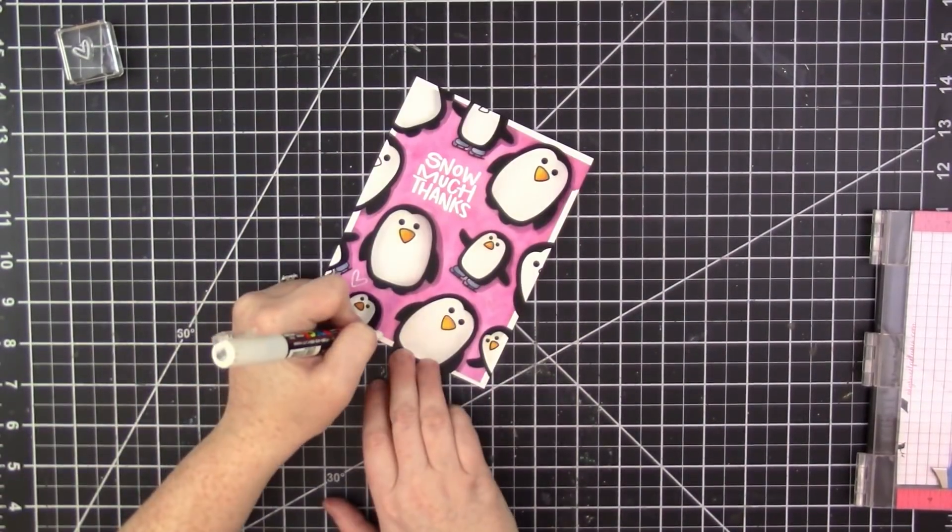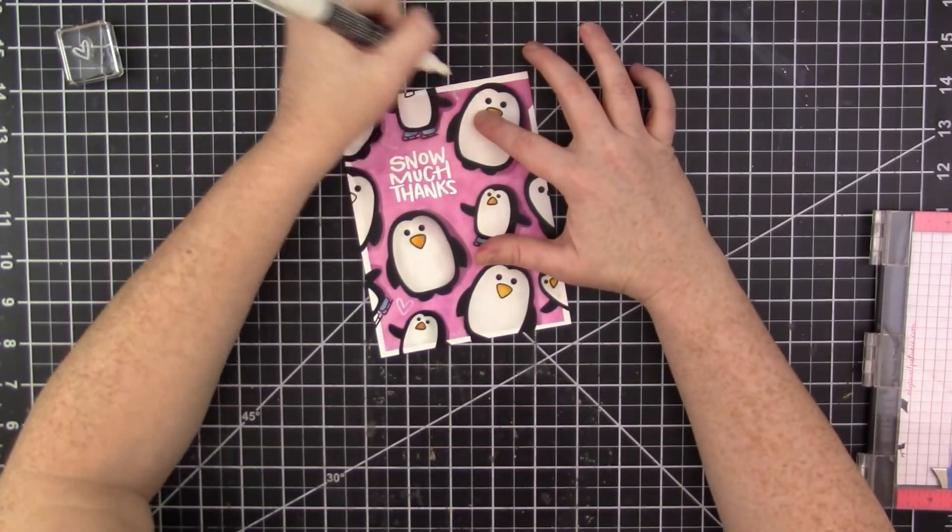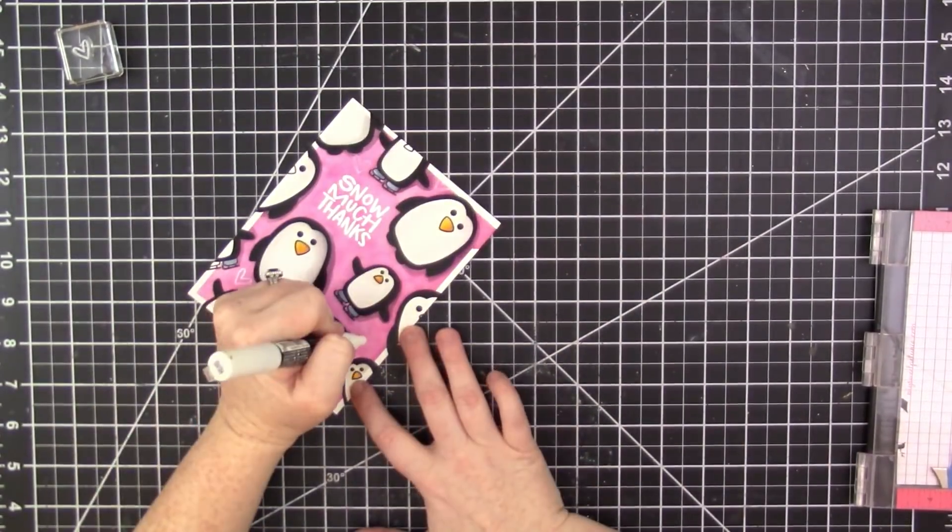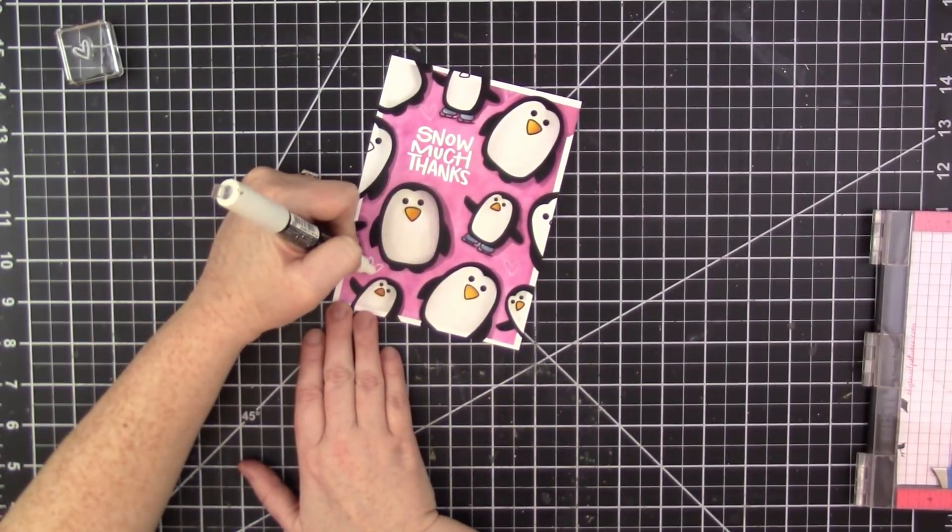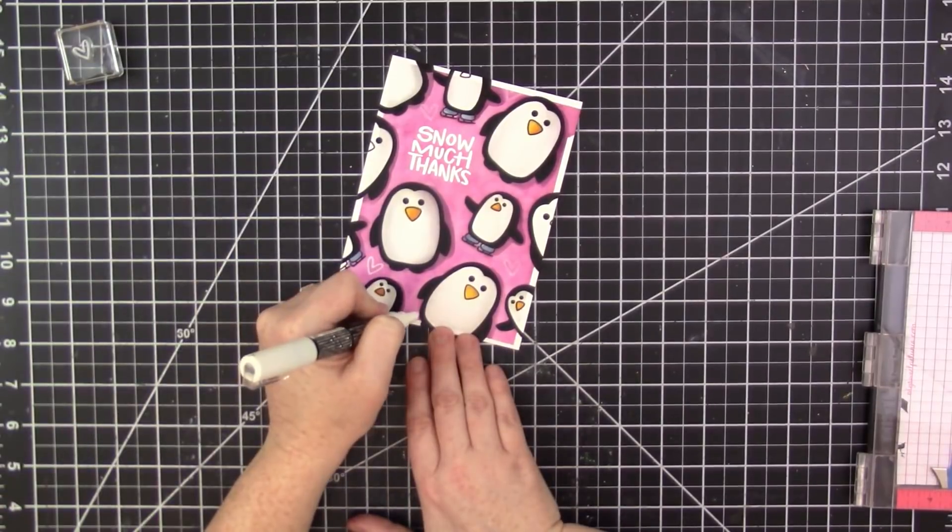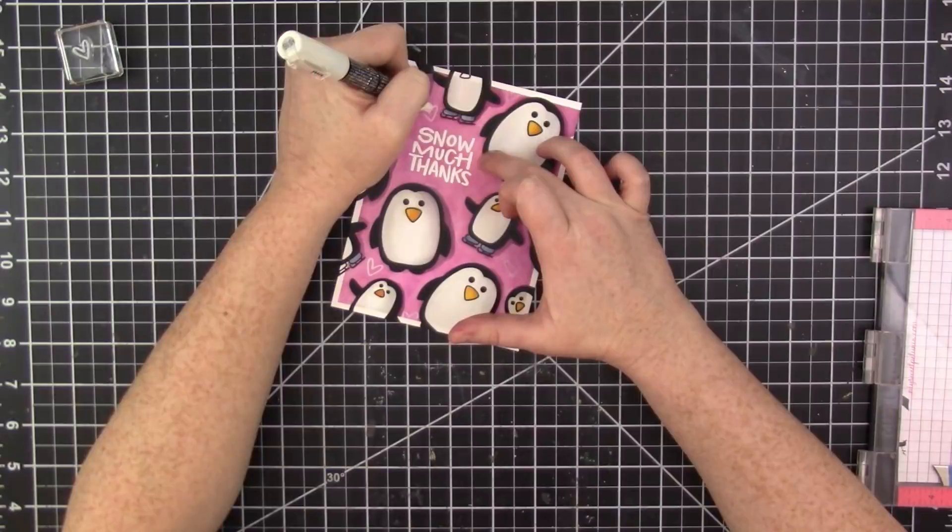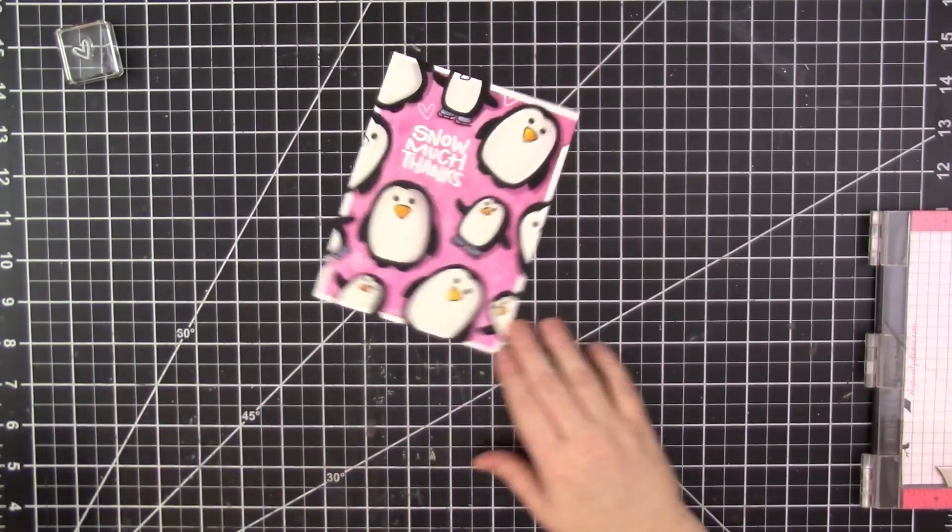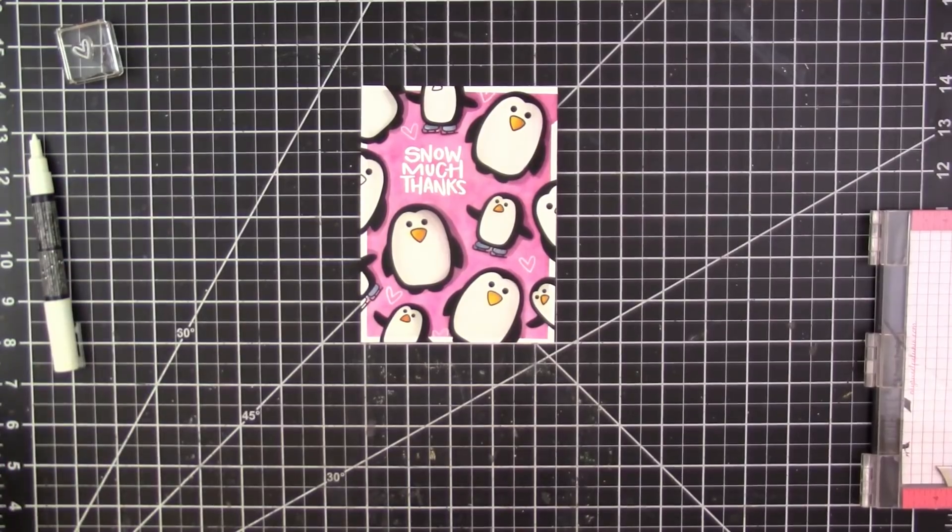My ink pad was a little dry, but I just decided that I was gonna stamp the image and then I'll go over it with a Uni Posca paint pen. I really really love using these pens for adding details like this. I'm using the extra fine point, but the fine point pen would probably work fine too.